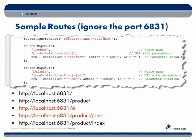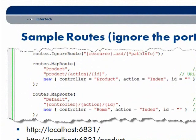Here we have a couple of different routes being added. The product route is more specific than the default one — notice it expects the literal word 'product' in the query string without curly braces. If they specify 'product' there, it gets matched to this route, then the action can be chosen and data can be passed along. If they use any other query string, it falls down to the default route.